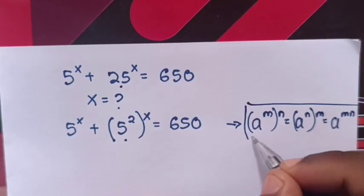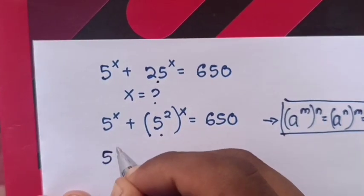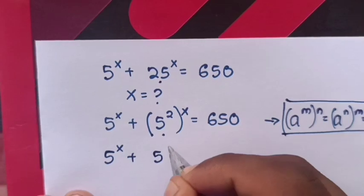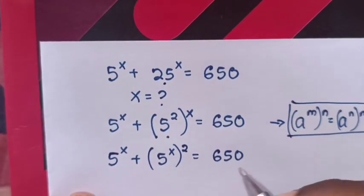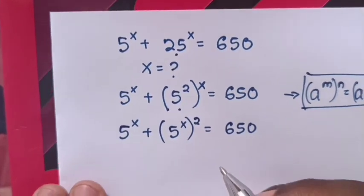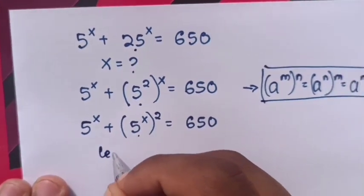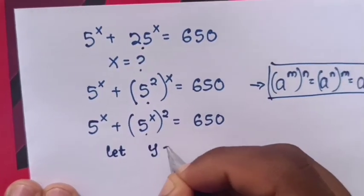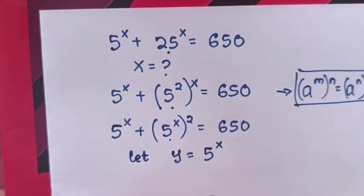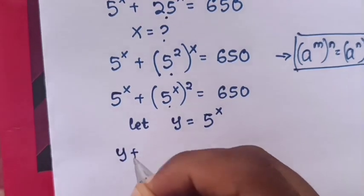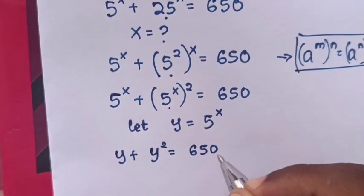Therefore, inside the bracket we exchange the powers. Our equation becomes 5^x + (5^x)² = 650. Since we have 5^x and 5^x, we let y = 5^x, so our equation will be y + y² = 650.